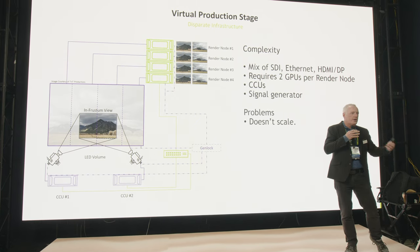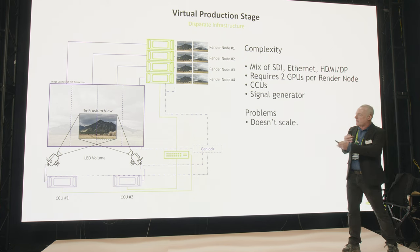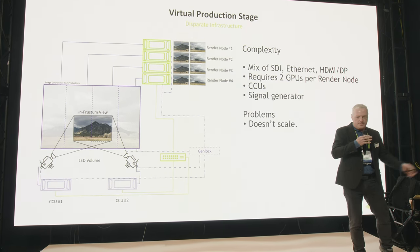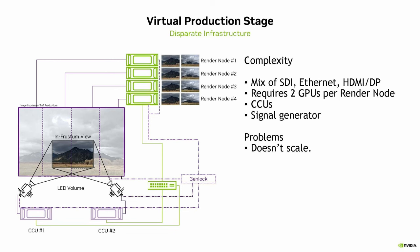In a traditional stage you have a mix of technologies: cameras connected via SDI into CCUs — camera control units — that are typically black boxes from a vendor. Those CCUs transfer the camera view frustum to render nodes, which have two GPUs: one to render the inner frustum and one for the outer frustum. The render nodes, connected with nDisplay in the case of Unreal Engine, drive the LED wall through DisplayPort or HDMI via an LED wall controller. Timing is maintained with a house sync signal from a traditional sync generator, as has been done in broadcast for years.